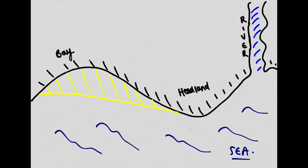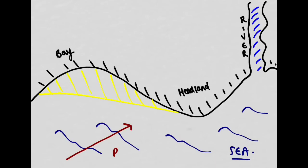Here we have a diagram showing a coastline. We have what we call a bay, a headland, and a river channel — so we have the mouth of a river coming out into another bay. There is also a beach here with beach material, which is obviously a depositional landform. Our prevailing wind is coming from this direction, as shown on the diagram.